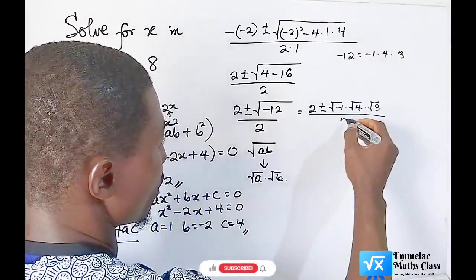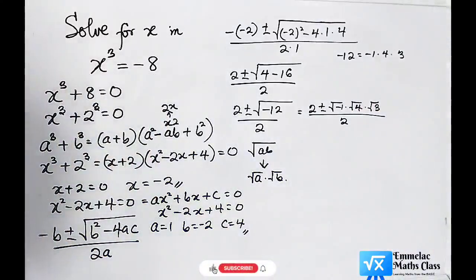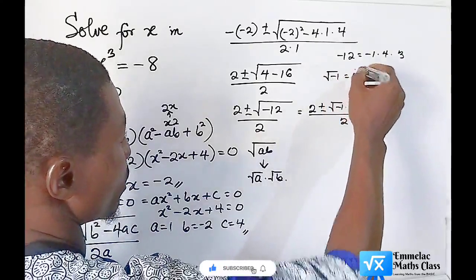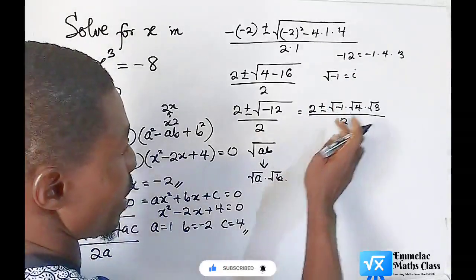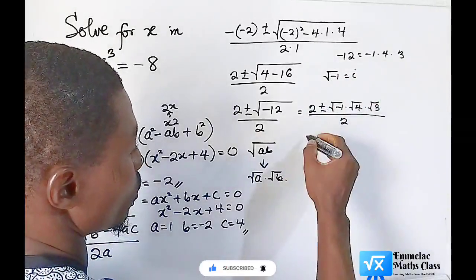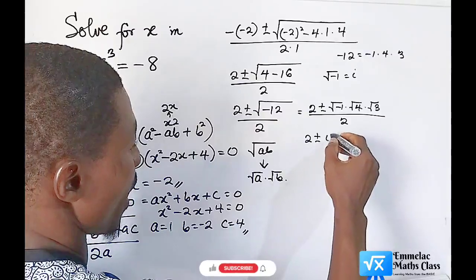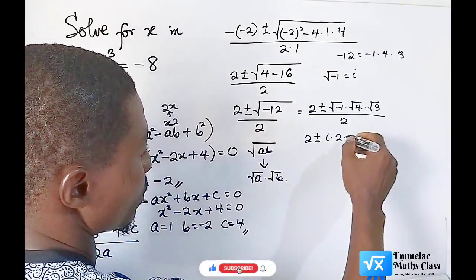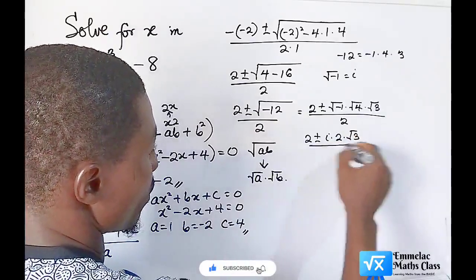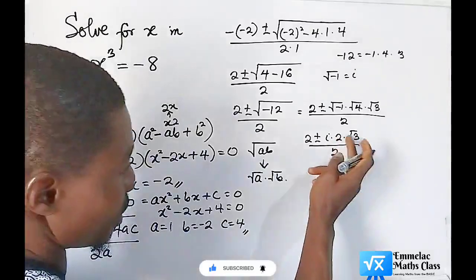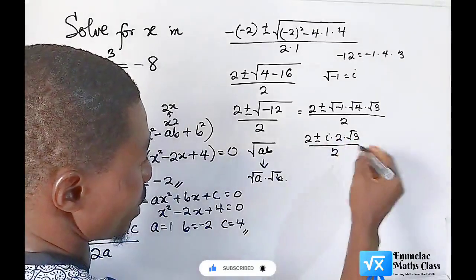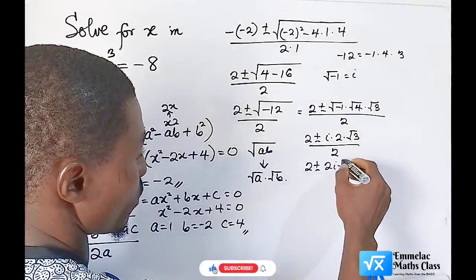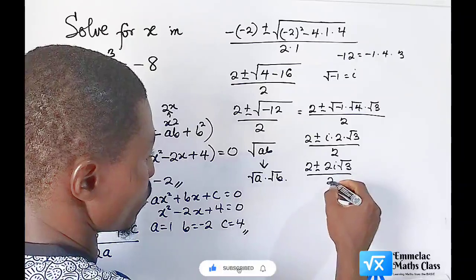This gives us 2 ± (√(-1) × √4 × √3) / 2. Let us note that the square root of negative 1 equals i. The square root of 4 is 2. So we have 2 ± i × 2 × √3 / 2, which we can rearrange as (2 ± 2i√3) / 2.